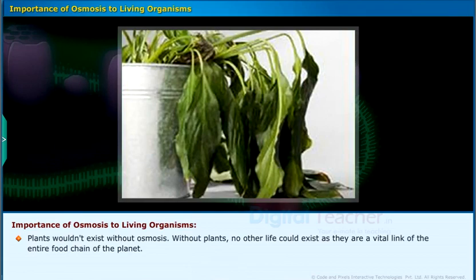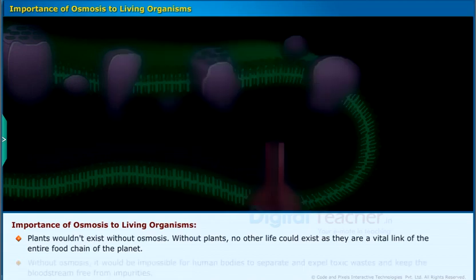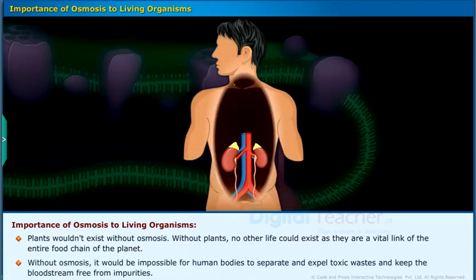Plants wouldn't exist without osmosis. Without plants, no other life could exist as they are a vital link of the entire food chain of the planet. Without osmosis, it would be impossible for human bodies to separate and expel toxic wastes and keep the bloodstream free from impurities.